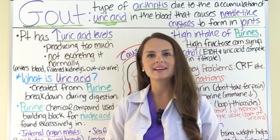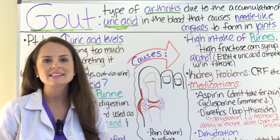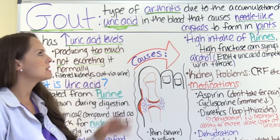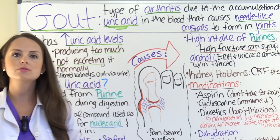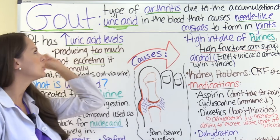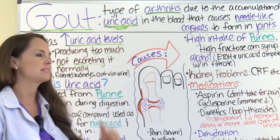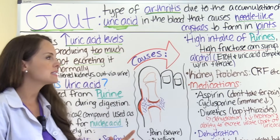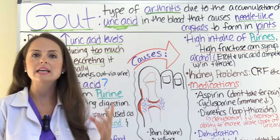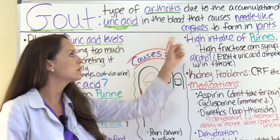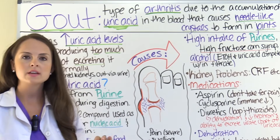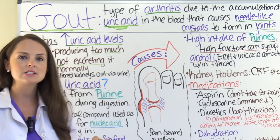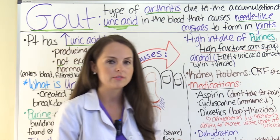So what is gout? Gout is a type of arthritis due to the accumulation of uric acid in the blood that causes these needle-like crystals to form within the joints. And this condition is very, very painful.